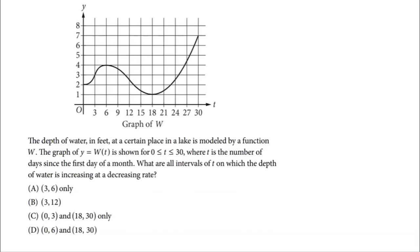All right, let's take a look at these multiple choice questions. Here is the first one. The depth of water in feet at a certain place in a lake is modeled by a function W. The graph of y = W(t) is shown for 0 ≤ t ≤ 30, where t is the number of days since the first day of a month. What are all intervals of t on which the depth of water is increasing at a decreasing rate? So what we see here is that as the days go by, the water level changes. Sometimes it goes higher, sometimes it goes lower, and we're looking for where it's increasing at a decreasing rate. Now, decreasing rate means concave down.